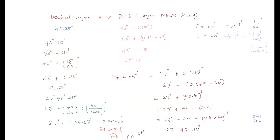So in degree measure, we can write angles in two ways: decimal degree form and degree-minute-second (DMS) form. We can convert between them. The most important relations are: one degree equals 60 minutes, and one minute equals 60 seconds — that is, one degree is divided into 60 equal parts called minutes, and each minute is divided into 60 equal parts called seconds.